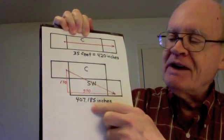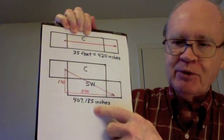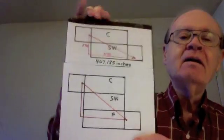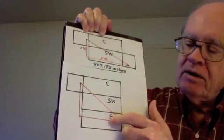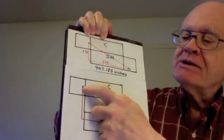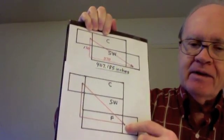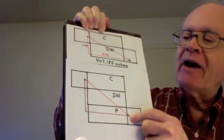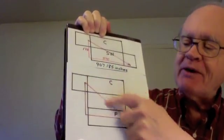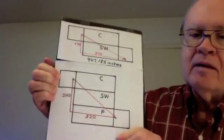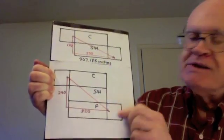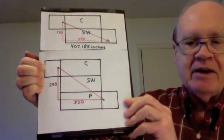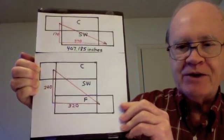Yet, even this is not the shortest possible route. Here is another configuration. That's the ceiling, that's the side wall, that's the floor. Here's the spider, here's the fly. We have, again, a right triangle where the path from the spider to fly is the hypotenuse. The length of this leg is 240 inches. The length of this leg is 320 inches. Again, we can use the Pythagorean equation to find the hypotenuse.